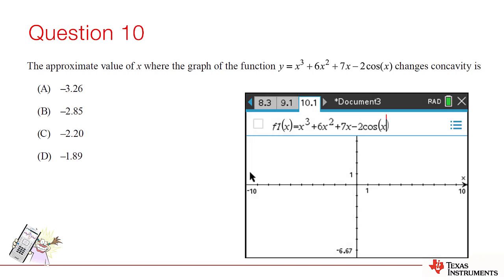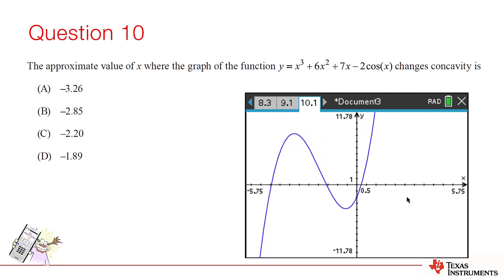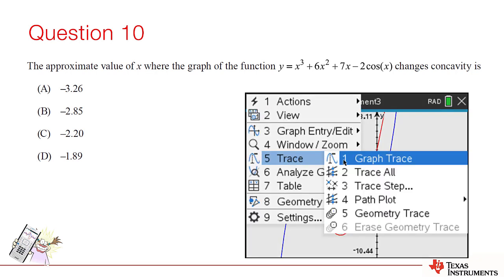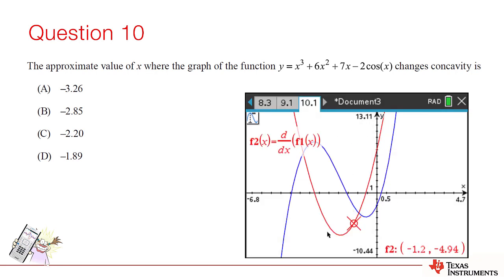If you graph the original function, we can see that this change occurs somewhere between negative 3 and negative 1, but there are three options available here. So, let's check out the derivative. Now, we can clearly see where the derivative is decreasing and where it is increasing. The turning point represents this transition. We can easily locate turning points using the trace option. Our solution is x equals negative 1.89, which corresponds to option D.